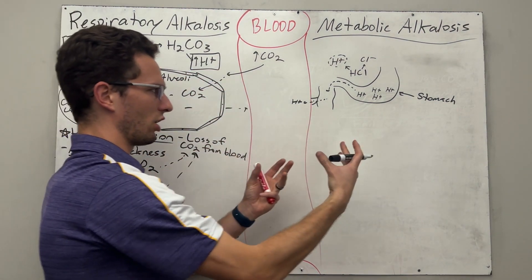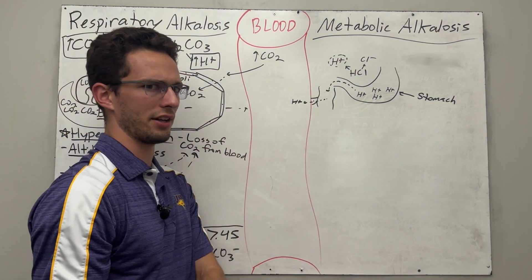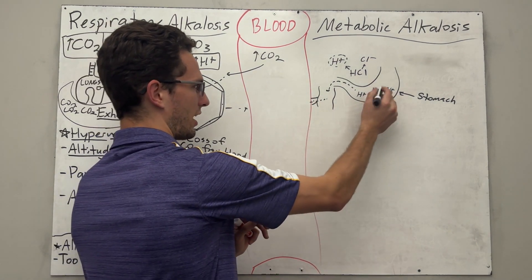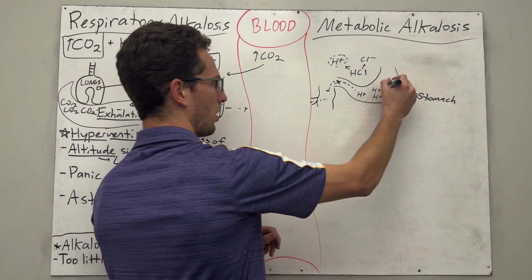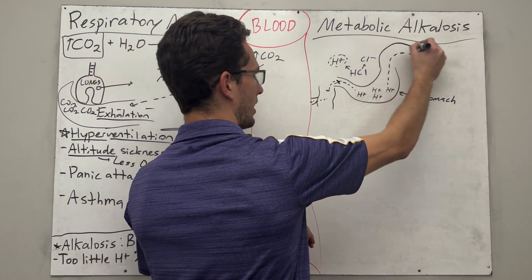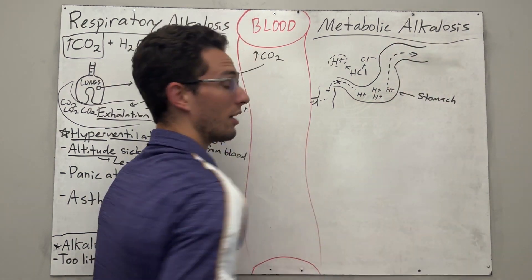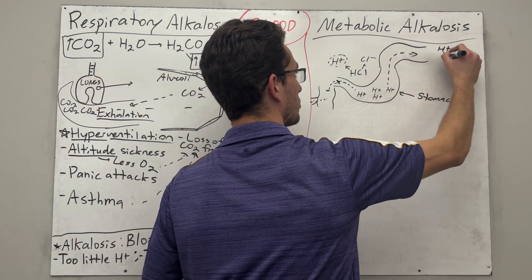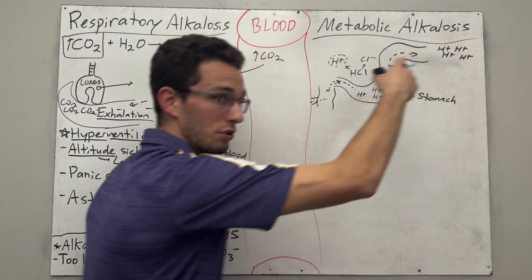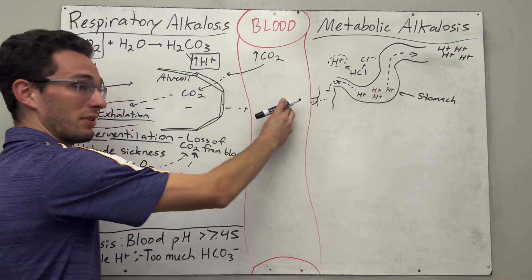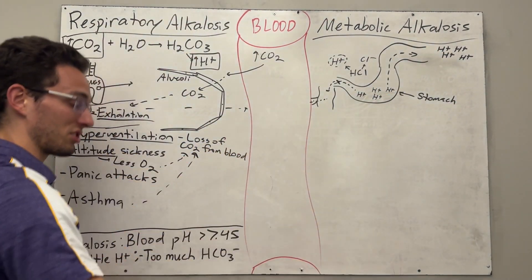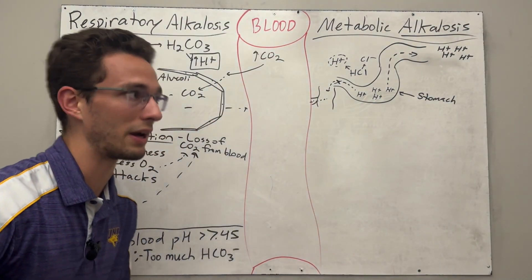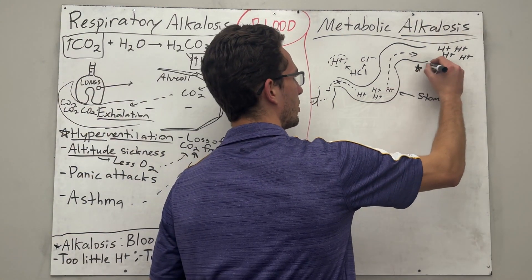So what could be happening to make us lose hydrogen ions? Well, on the flip side — what if those hydrogen ions, instead of going down into the intestinal tract, go up and out? You guys have vomited before. If you vomit, you are going to lose a lot of those hydrogen ions from losing hydrochloric acid. If you lose them, there are fewer in the bloodstream, because there's less in your body in general. That could lead to metabolic alkalosis by losing hydrogen ions through vomiting.